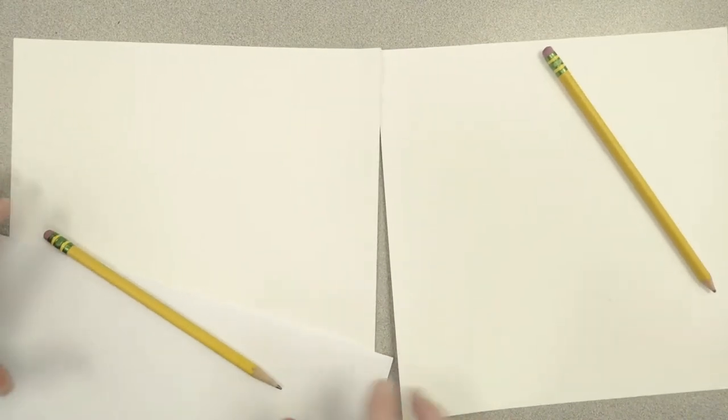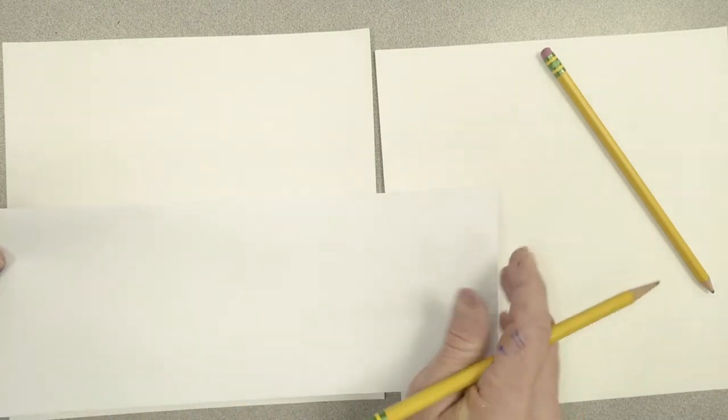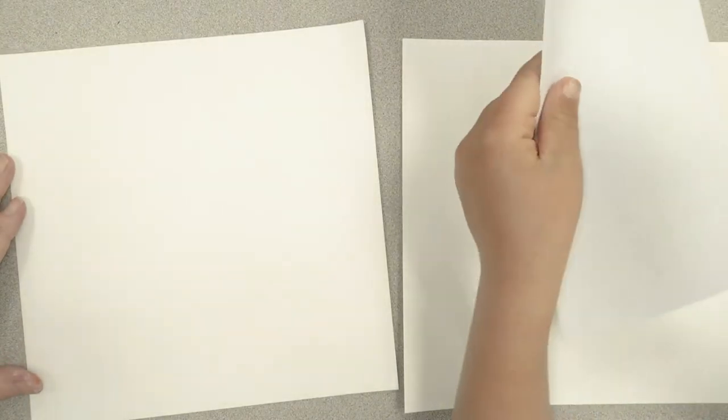So the first thing we're going to do is draw our horizon line. Now horizon line is the line that's where the sky meets the land. That's where we get the word horizontal. A horizontal line goes from left to right. And that's what the horizon does. Horizontal is this way, left to right.